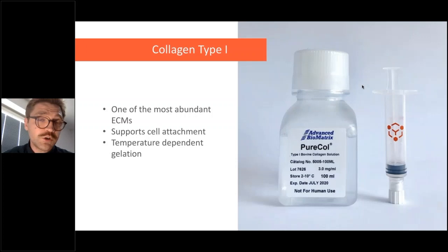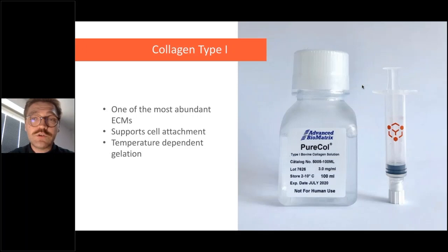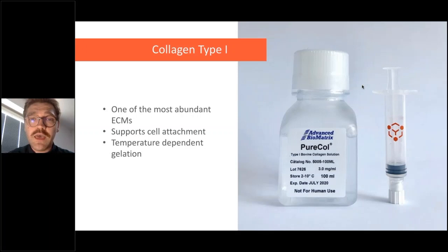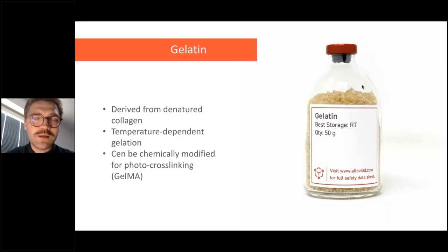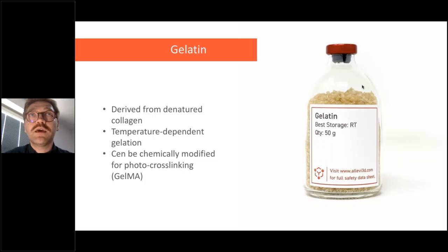Collagen type 1 is also present in the natural ECM of blood vessels. Unlike alginate, it supports cell attachment through cell attachment motifs. However, its gelation is temperature-dependent, which makes it a bit trickier. Gelatin, which we've already heard about today, can also be used for sacrificial or support bioprinting. I'll present a technique called FRESH that uses gelatin to make complex three-dimensional constructs including blood vessels.